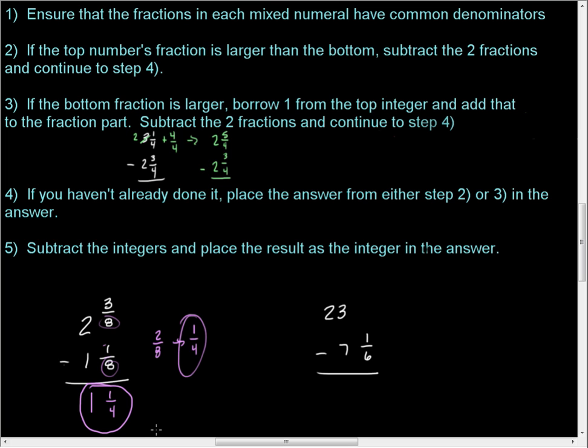Okay, now it starts to get a little tricky, though. So, we've got to pay very close attention to this. We want to make sure that we borrow correctly. In the case of twenty-three, it's twenty-three and zero sixths. Okay? Ensure that the fractions have common denominators, and they do.